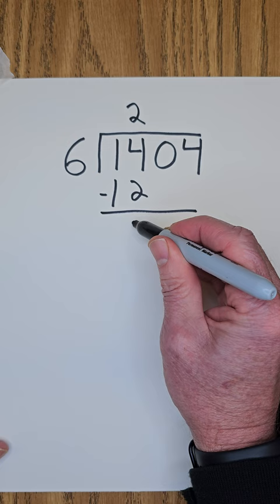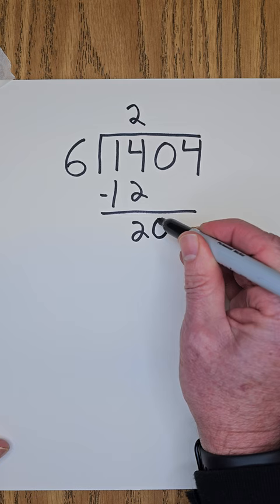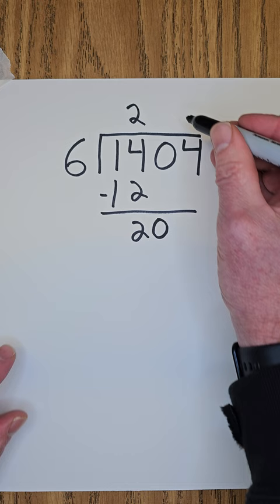Drop that 0 down. Just drop it. Add a little beatboxing music there. How many times can I put 6 into 20? 6 times 2 is 12, 6 times 3 is 18. Number 3 is the answer. 3 times 6 is 18.